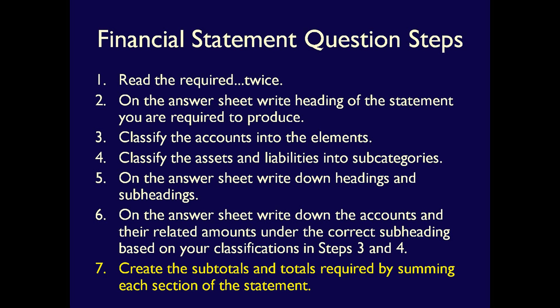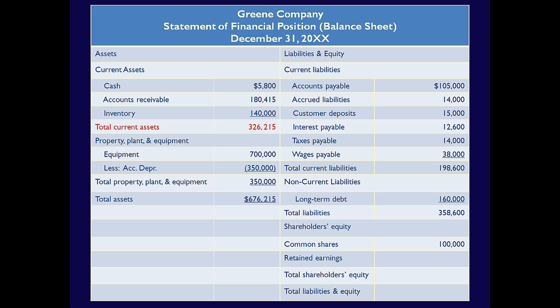Step 7: Add the accounts under each heading and subheading to create all the subtotals and totals. I've added total current assets, total property plant and equipment, and total assets. On the liabilities side, I added total current liabilities and total liabilities. Notice I don't have a subtotal for non-current liabilities because there's only one line item under this subheading, so a subtotal is not required. I can't yet provide total shareholders' equity or total liabilities and equity because I don't have a retained earnings number.